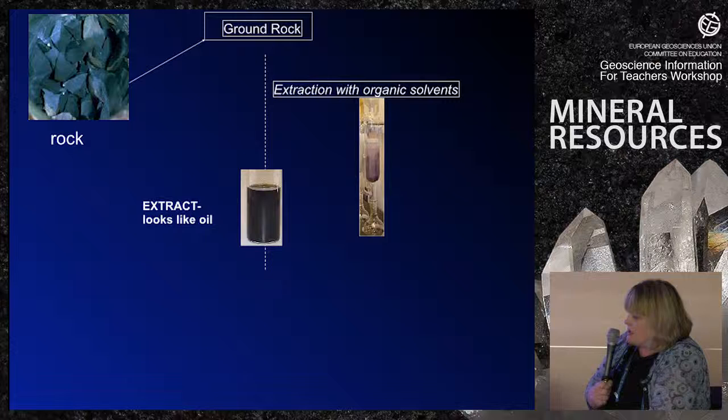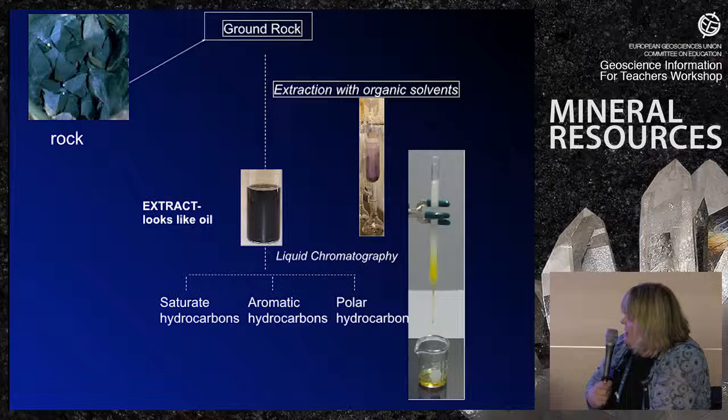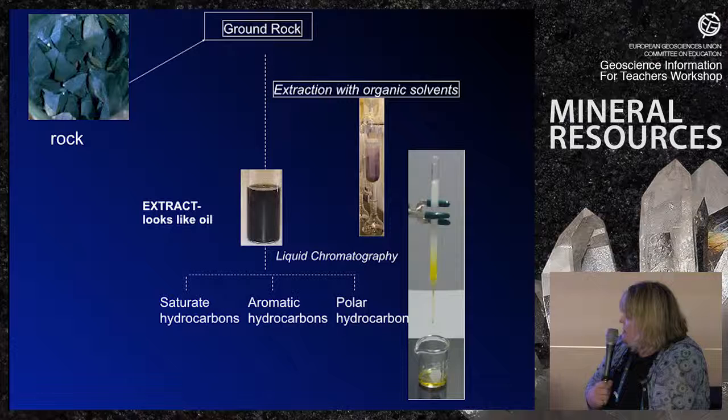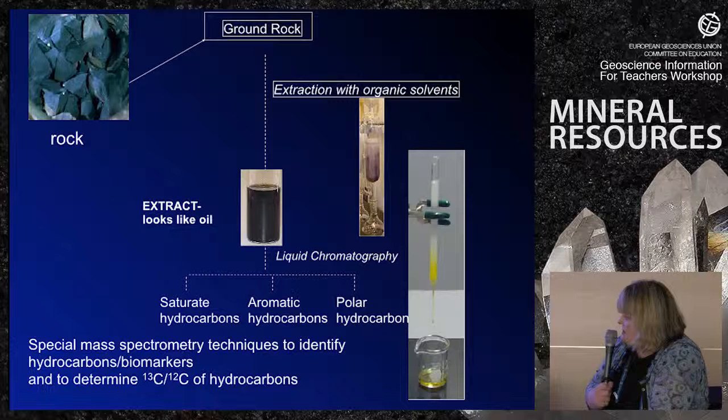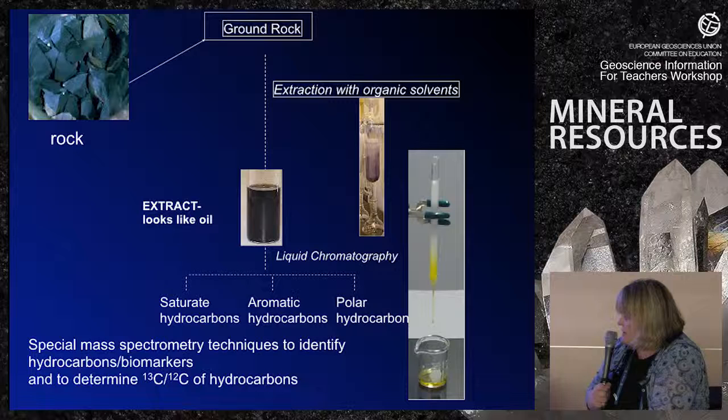We obtain an extract which looks very much like an oil. Within this extract, we can separate thousands of different organic molecules which derive from natural product precursors. These are eluted by methods of liquid chromatography to get saturate, aromatic and polar components, and these are then identified by special mass spec techniques. Further, we can measure their individual stable carbon-12 and carbon-13 isotopic ratios at natural abundance levels of each compound within these mixtures.